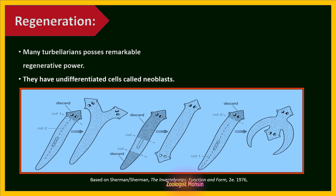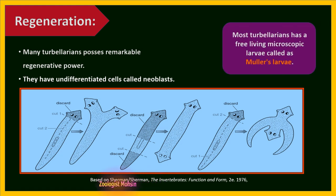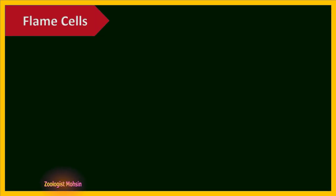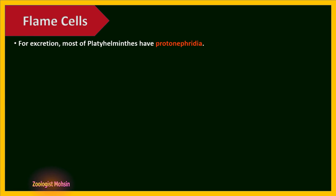That is the power of regeneration, which is more than just wound healing. Most turbellarians have a free-living microscopic larva called Müller's larva. Another very famous characteristic of this phylum is excretion: most Platyhelminthes have protonephridia.